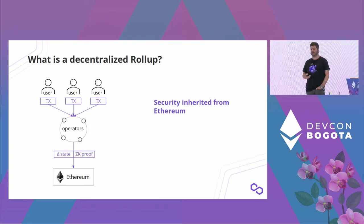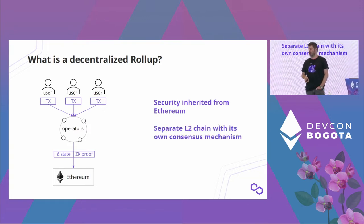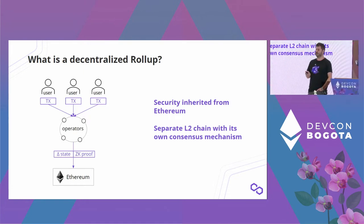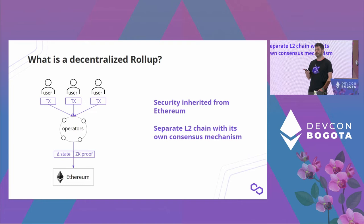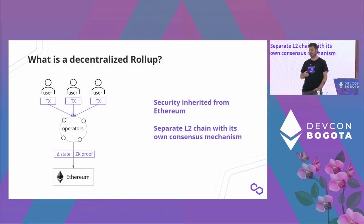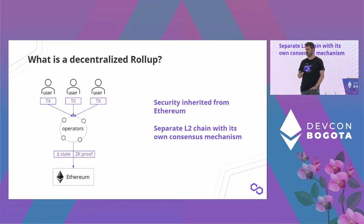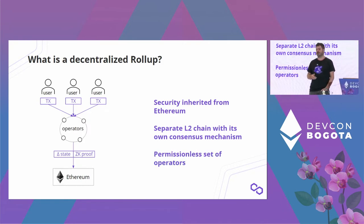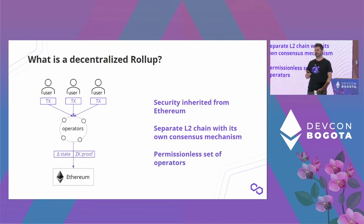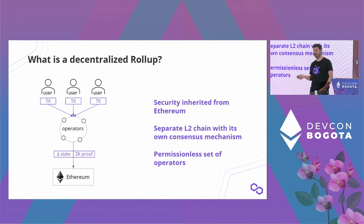We inherit security from Ethereum. What is specific to a decentralized rollup is that it has its own L2 chain and its own consensus mechanism, because operators need to agree on the state of the chain. We want the set of operators to be permissionless, meaning anybody can join and leave the set as they please.